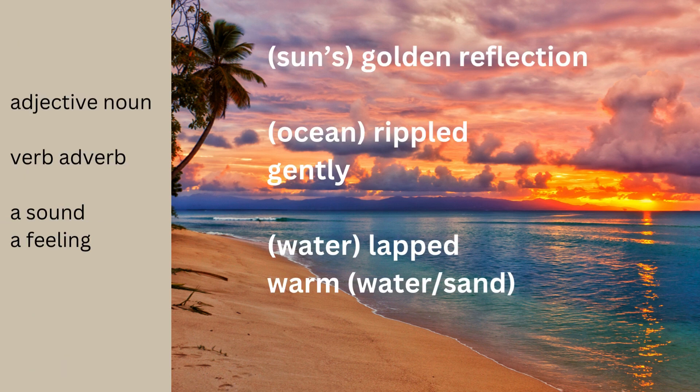Here are some sample answers — here's some I did earlier. We could have 'the golden reflection' — golden being the adjective, reflection being the noun. The verb and adverb would be 'rippled gently' — I'm talking about the water, the ocean, the waves. And for a sound, I've got 'lapped' — the sound of the water lapping against the shore. For a feeling, I've got 'warm' — so the warm water or the warm sand. When we're planning, it's really just about scribbling down ideas that we'll later put into sentences.